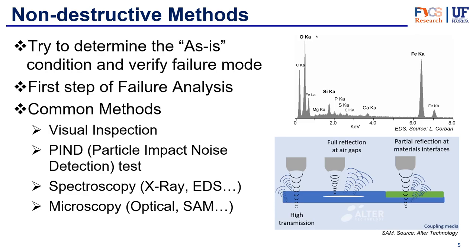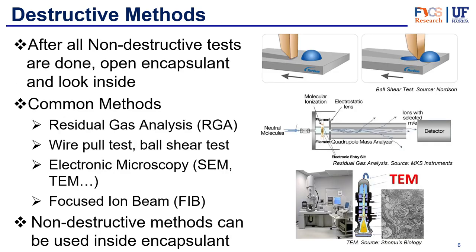Those are all the non-destructive methods. Once those are completed, you move on to destructive methods, opening the encapsulant to look inside. You've checked everything outside and now you break into the encapsulant, using different ways of cutting into it. An example is the Residual Gas Analysis, or RGA test, which is a type of chemical test designed to extract and analyze the gases from inside the package.